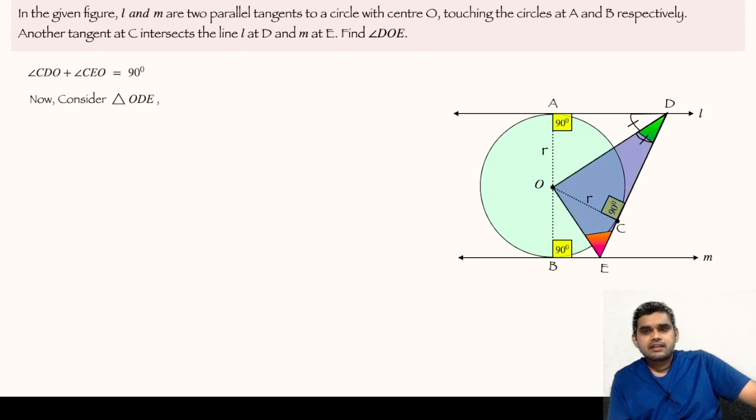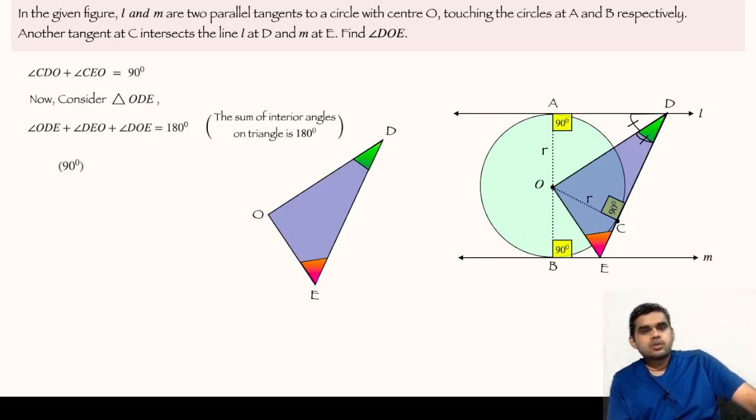In this triangle, if we add all the interior angles, their sum will be 180 degrees. Angle ODE plus angle DEO is 90 degrees, plus angle DOE, equals 180 degrees. So angle DOE will be 180 minus 90 degrees, that is 90 degrees.